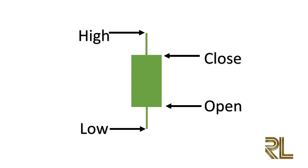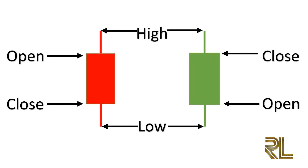You may have wondered why the candlestick is green in color. Most trading platforms today will allow you the option to change the color of the candlesticks on your charts, so it doesn't really matter. For the rest of this video, let's use green to represent a bullish candlestick and red to represent a bearish candlestick.